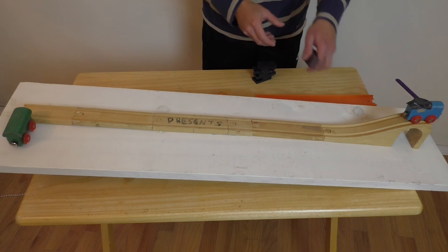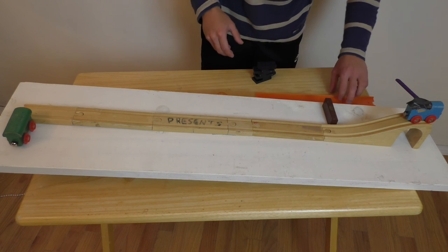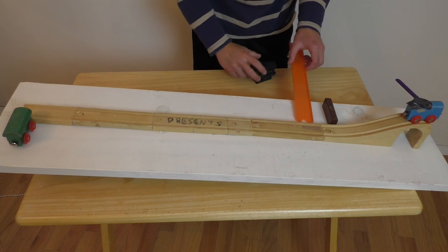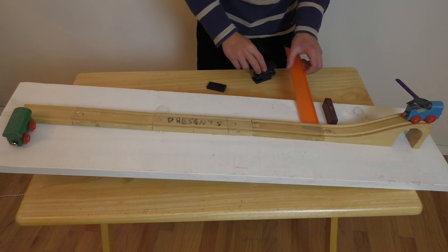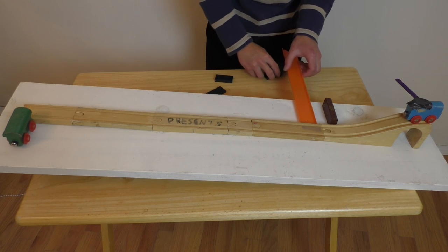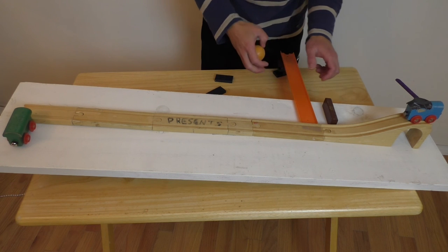And now we're going to attach the Jenga block and the Hot Wheels track with the domino supports. I'm going to make sure it's an angled slope.